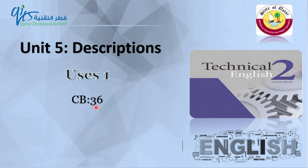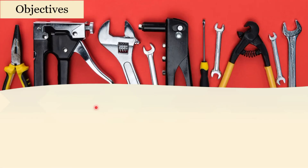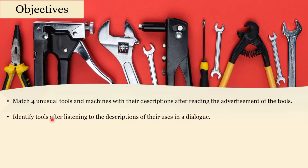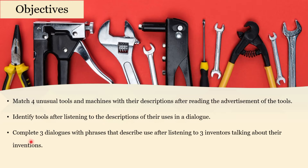In this lesson we have three objectives. Number one, match four unusual tools and machines with their descriptions after reading the advertisement of the tools. Number two, identify tools after listening to the description of their uses in a dialogue. And the final objective is complete three dialogues with phrases that describe use after listening to three inventors talking about their inventions.